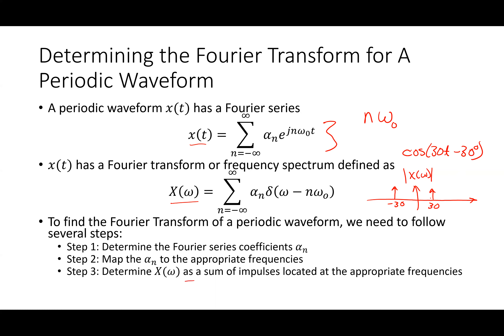Why do we ever do this? You've actually been doing it all along in your circuits course. When you deal with impedance analysis and I give you cosine of 30t minus 30 degrees, you find the phasor: magnitude one, angle negative 30. That's very similar to the Fourier transform at 30 radians per second. Phasor analysis is really part of the Fourier transform — that's where impedance analysis comes from.